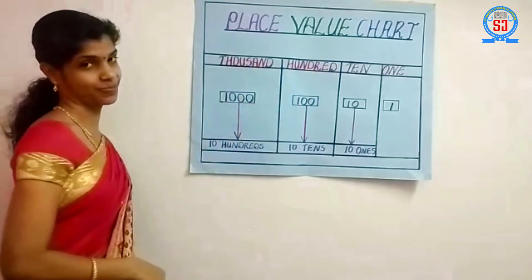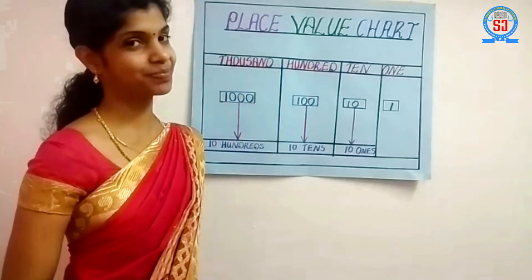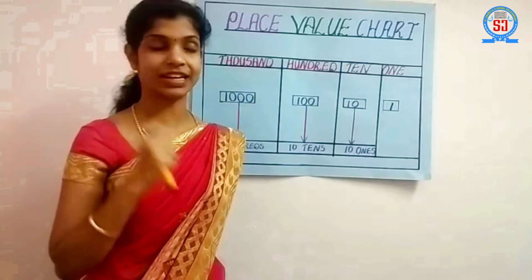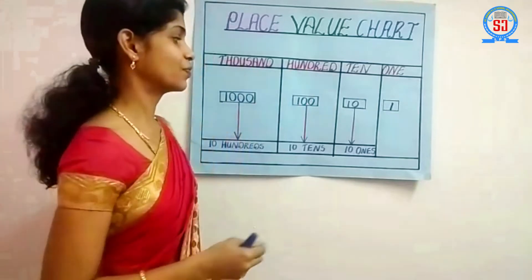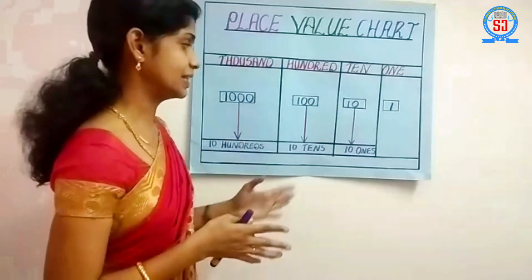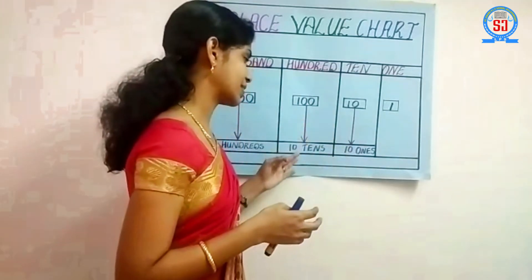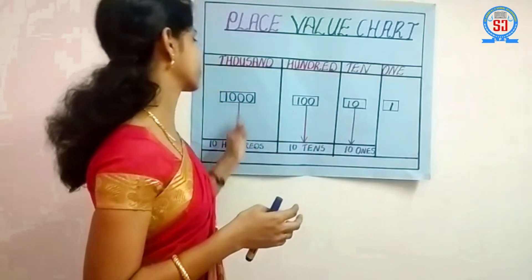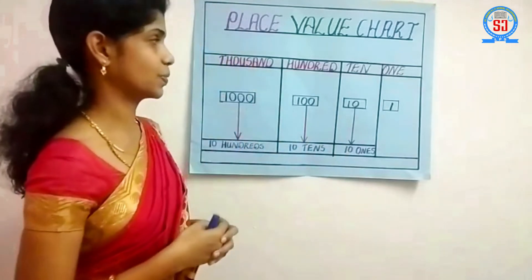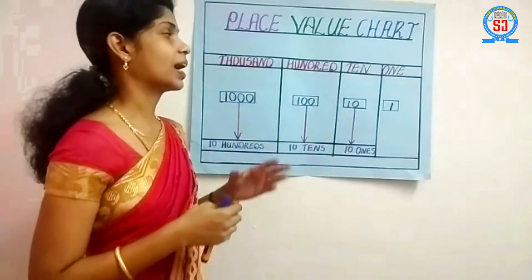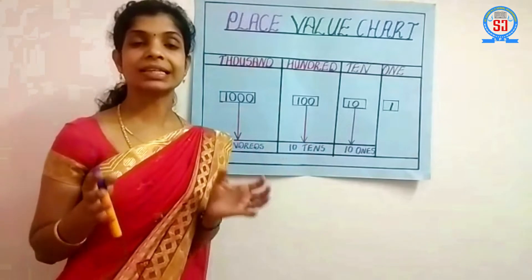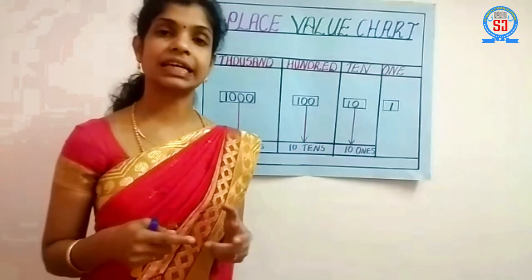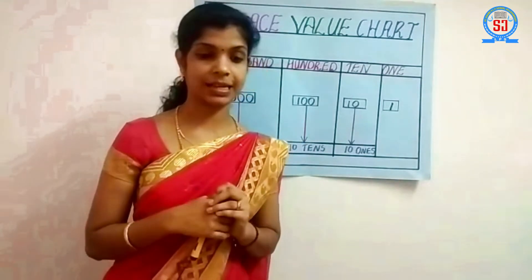Do you understand the relationship? When we have ten tens we will get a hundred, ten hundreds we will get a thousand. By using this place value we can read any number very easily.